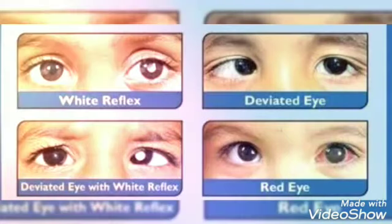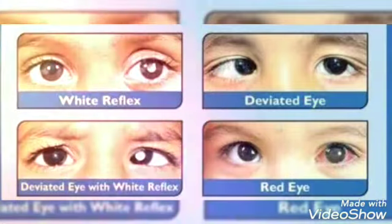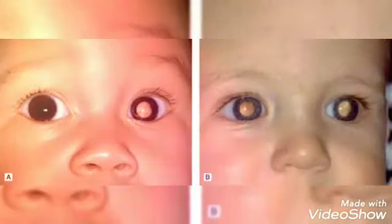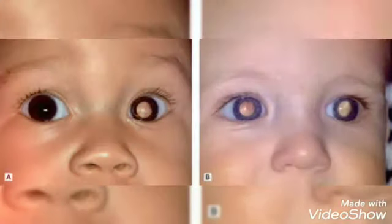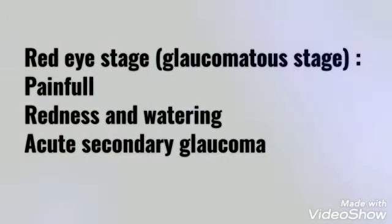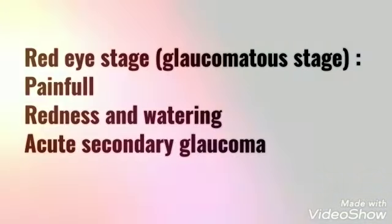Here you can see the white reflex and deviated eye — deviated eye with white reflex. It can be unilateral or bilateral. The second stage is the red eye stage, which is painful. Redness and watering of the eyes occur in this stage.